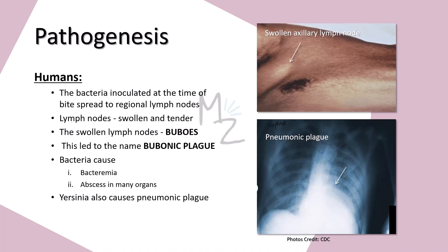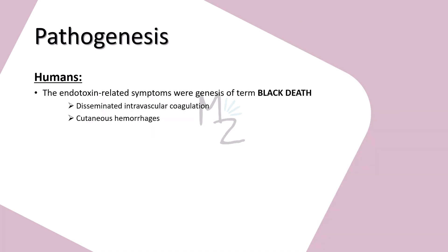After the bite, Yersinia pestis is inside the human host. The Yersinia pestis inoculated at the time of the bite spreads to the regional lymph nodes, which become swollen and tender. These swollen lymph nodes are the buboes that gave rise to the name bubonic plague. Yersinia pestis can reach high concentrations in the blood, causing bacteremia, and can disseminate to form abscesses in many organs. It is also responsible for causing pneumonic plague. Endotoxin-related symptoms — including disseminated intravascular coagulation and cutaneous hemorrhages — were probably the genesis of the term black death.